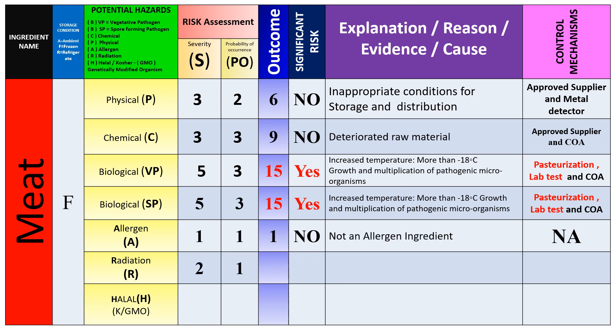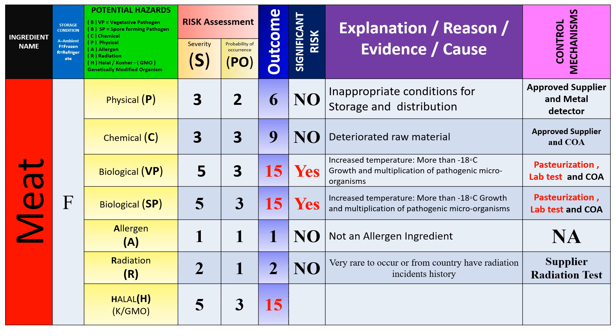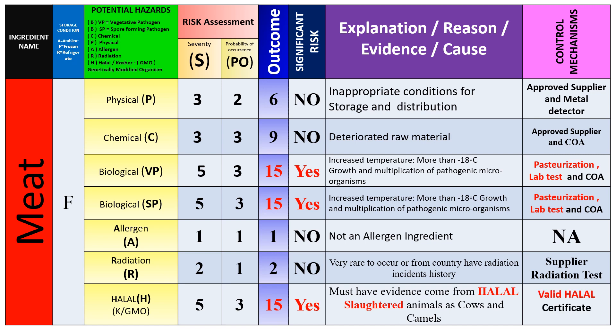Spore-forming pathogens for meat are assessed the same as vegetative pathogens. The allergen is not applicable because meat is not an allergen. Radiation is very rare. The halal hazard is significant — we must have evidence that the meat was slaughtered according to halal laws.